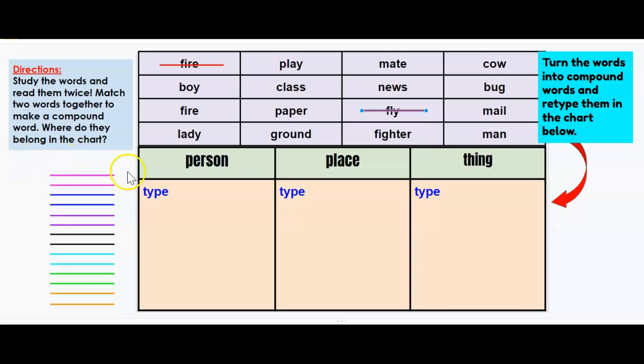and fly can go together, so I'm going to create my compound word: firefly. Now, is firefly a person, place, or thing? A firefly is an animal, so it would be a thing. So I will retype firefly as a compound word below.